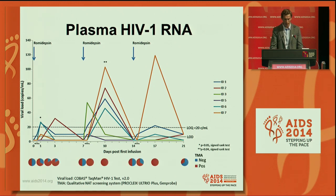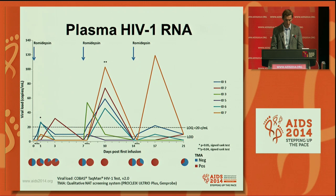We also measured HIV RNA using the TMA assay, which gives a yes-or-no answer as to whether HIV RNA is present in plasma. Positive results are shown in red and negative in blue. At baseline, 50% of samples were positive. This increased to about 85% three days after the first infusion, and after the second and third infusions we saw up to 100% of samples being positive from these patients.